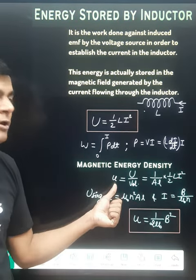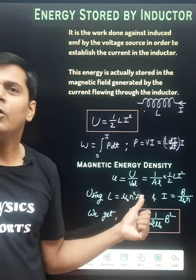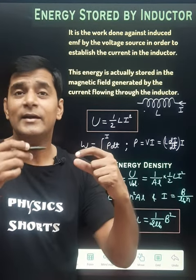Energy density small u is given by total energy capital U per unit volume. Let the volume of this solenoid be area times length.